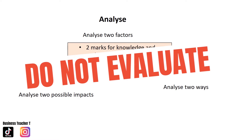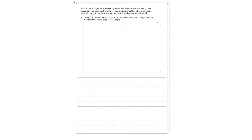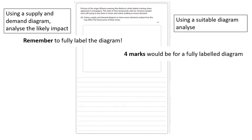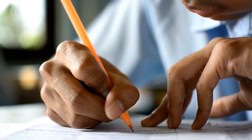There is another way that the six mark analyse question may be presented to you. For the six mark analyse question you might also be asked to draw a diagram. You need to be able to draw a range of diagrams as directed in your specification. Questions might be worded as: 'Using a suitable diagram, analyse...' or 'Using a supply and demand diagram, analyse the likely impact...' What you need to ensure is that you fully label your diagram — that would give you four marks if fully labelled and correct. The other two marks would be awarded for application and your analysis in the written section.